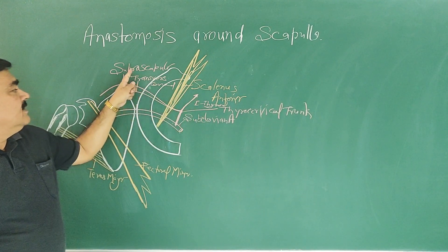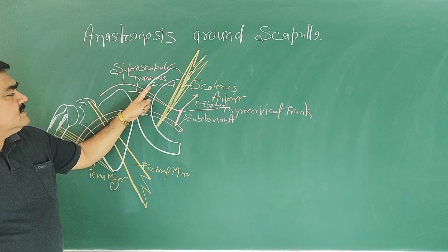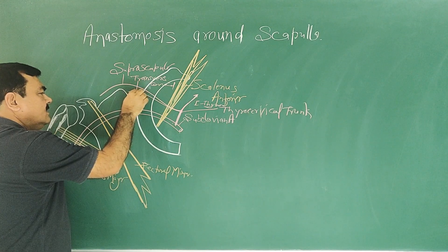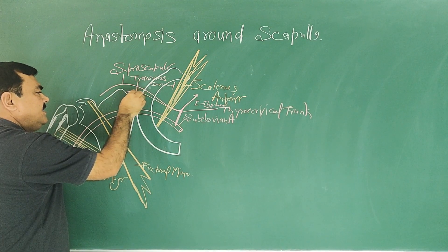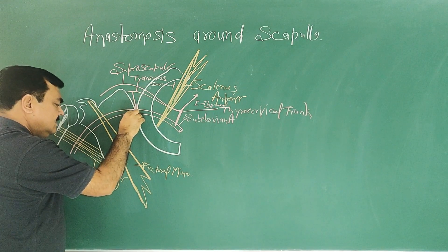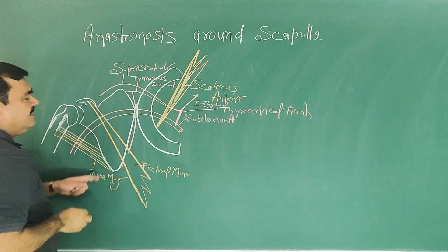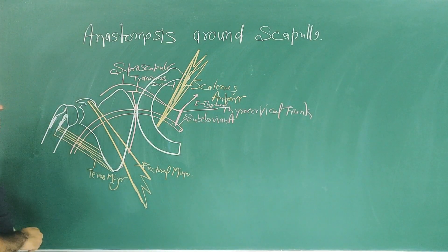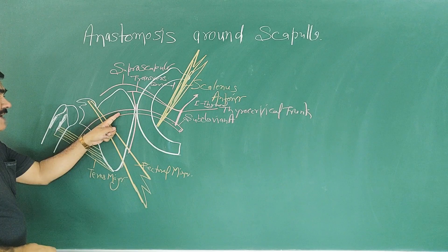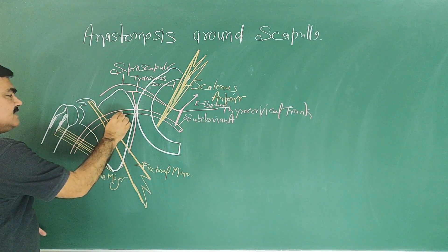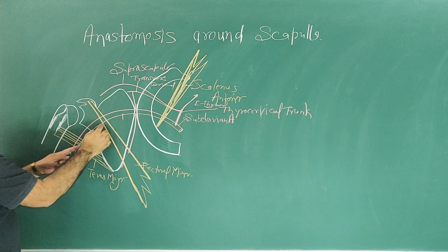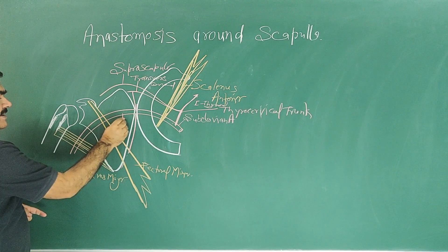The three branches are: inferior thyroid, suprascapular, and transverse cervical. The transverse cervical gives a deep branch — this is the deep branch of the transverse cervical artery. The second part gives one branch and the third part gives subscapular artery.